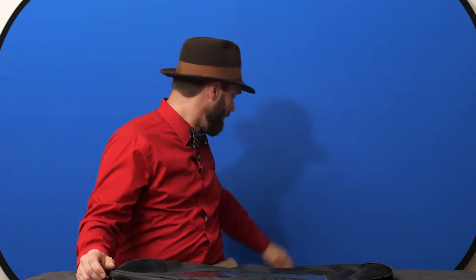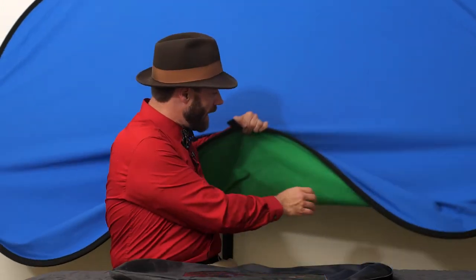Hi, I'm Levi Sim, and I wanted to show you this pop-up backdrop from Angler. It's the chroma key version with blue and green on each side. This is the one I'm using right here—this is the blue side, and it's got the chroma key green on the flip side.